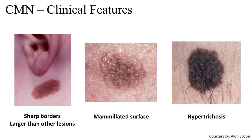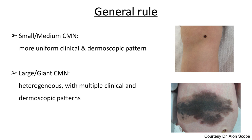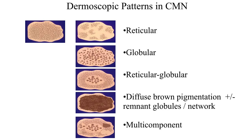What about the clinical appearance of congenital nevi? We know they can appear with hypertrichosis — thickened terminal hairs. They may have a mammylated surface. Often they have sharp borders and they're larger than other lesions on the body. As a general rule, small and medium congenital nevi are more uniform in their clinical and dermoscopic pattern than large or giant congenital nevi, which are frequently heterogeneous with multiple patterns.